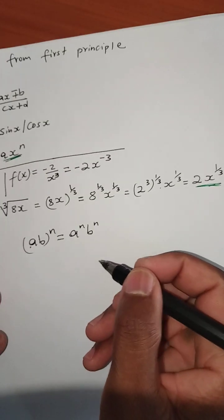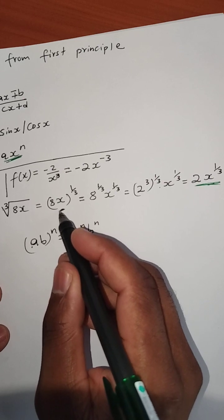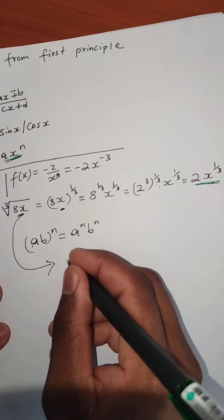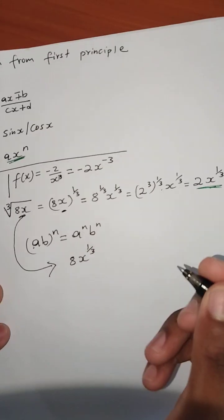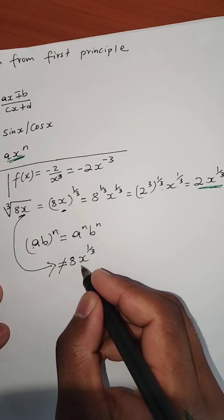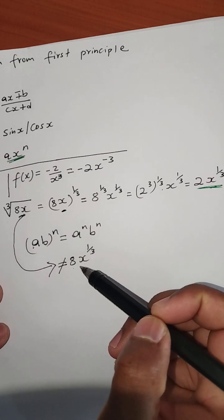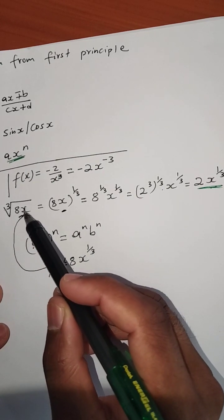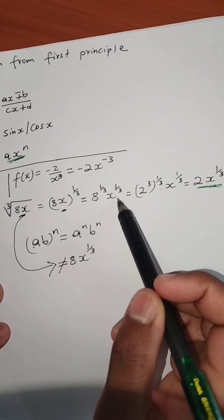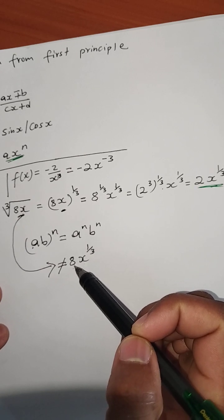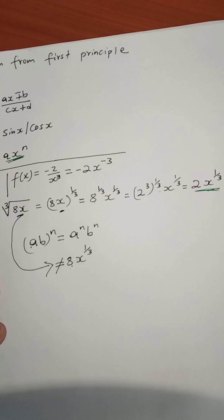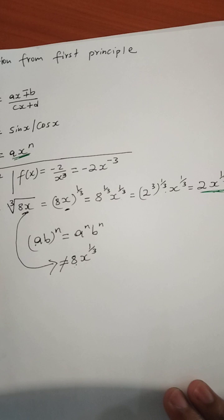A common mistake students make is writing the cube root of 8x as 8 times x^(1/3), which is wrong. The cube root of 8x is not the same as 8 · x^(1/3). The cube root applies to both 8 and x, so you must be careful — 8 is also raised to the cube root.